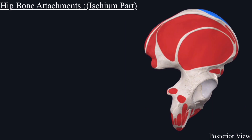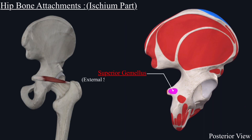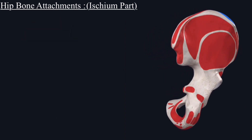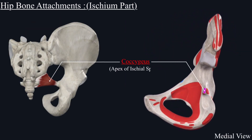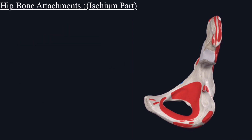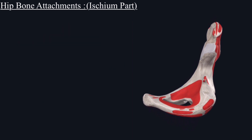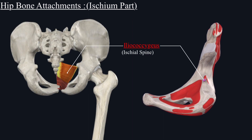Slightly more above is present the ischial spine. From the external surface of the ischial spine originates the superior gemellus muscle. From the apex originates the coccygeus muscle. Another muscle that originates from the ischial spine is the iliococcygeus muscle.